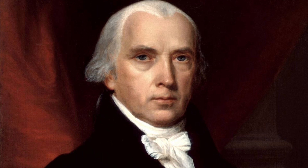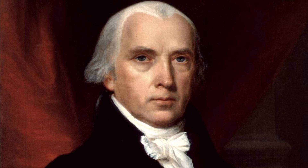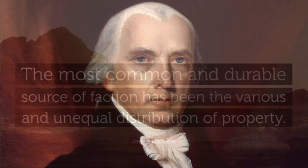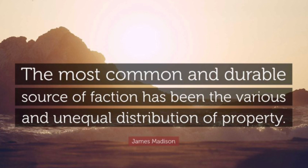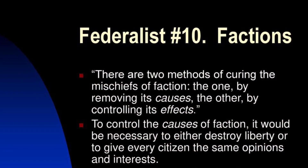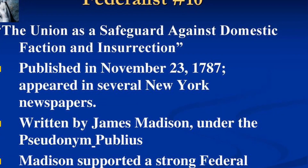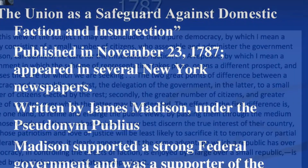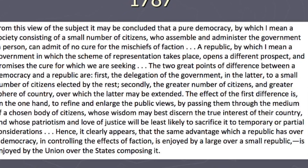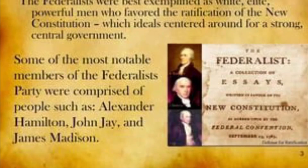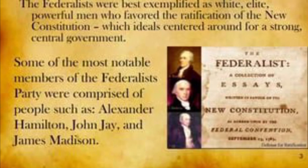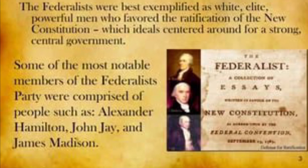Madison explains, 'By enlarging too much the number of electors, you render the representatives too little acquainted with all their local circumstances and lesser interests.' He argues that in a large, diverse republic like the United States, it's harder for a single faction to gain a majority. The diversity of interests across a vast territory makes it less likely for one group to dominate. He concludes, 'The influence of factious leaders may kindle a flame within their particular states, but will be unable to spread a general conflagration through the other states.' Madison believed local factions might exist, but their influence would be limited to their specific areas, preventing widespread conflict.